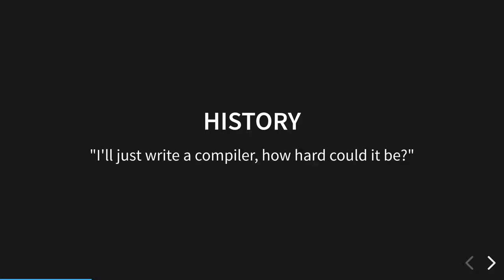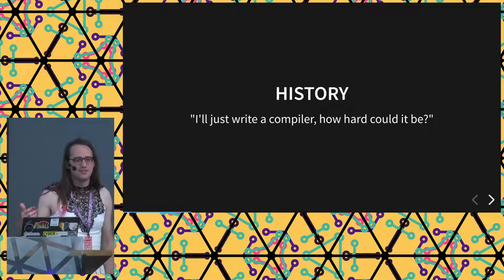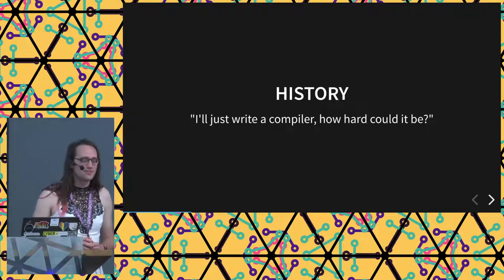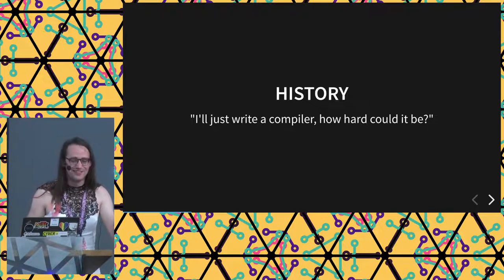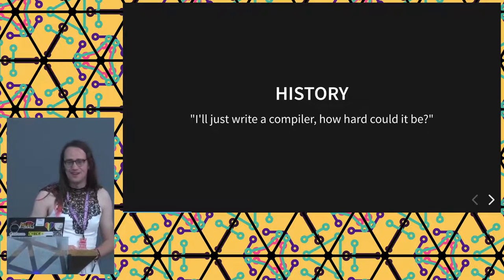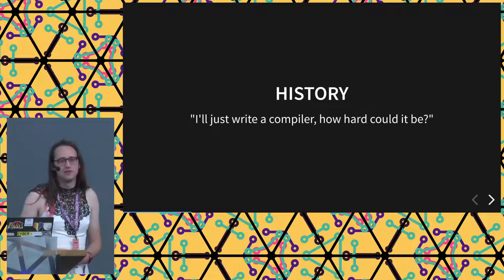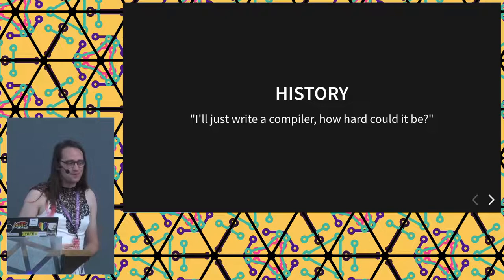So if you don't know Go, it's a programming language designed by Google about 12 years ago, which is actually pretty young for a programming language. Python is 30 years old, and C is probably older than most of you. Google designed it to solve their problems — it was intended for large servers with many cores — so it was entirely not designed to do this.